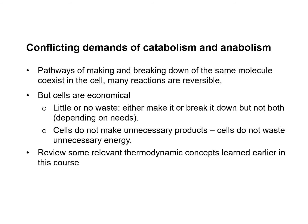There are conflicting demands of catabolism and anabolism in the cell — they are almost opposite things — and pathways for making and breaking down the same molecule coexist. Many reactions are reversible, so catabolism and anabolism of the same molecule can happen at the same time in theory, but cells are economical, meaning little or no waste. They will either make or break down a molecule, but not both, depending on their needs. Cells do not make unnecessary products or waste unnecessary energy. To better understand their control and balance, we need to review some relevant thermodynamic concepts from earlier in this course.